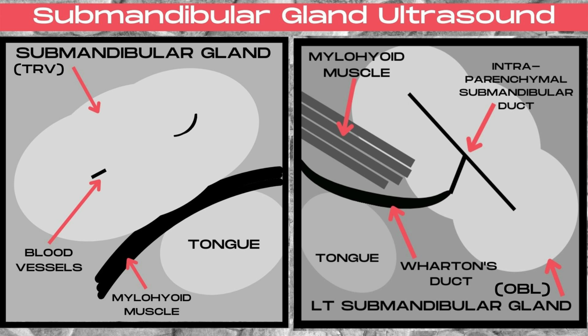Now let's look at the typical appearance of the submandibular gland on ultrasound. The drawing on the left represents a transverse submandibular gland — you'll note that it's slightly lobulated, hypervascular, and you commonly can see little pieces of blood vessels within the middle of the gland. The mylohyoid muscle is going to be inferior to the gland, with the hyperechoic tongue below that. The image to the right is an oblique representation of the submandibular glands, and this is the plane you want in order to visualize Wharton's duct, which would be located below the mylohyoid muscle and anterior to the tongue. It's exceedingly challenging to visualize Wharton's duct unless it is dilated and abnormal, so do not get discouraged if you cannot find it unless pathology is present.